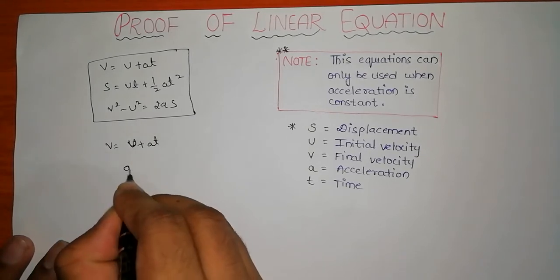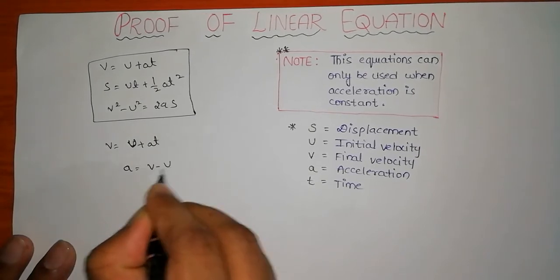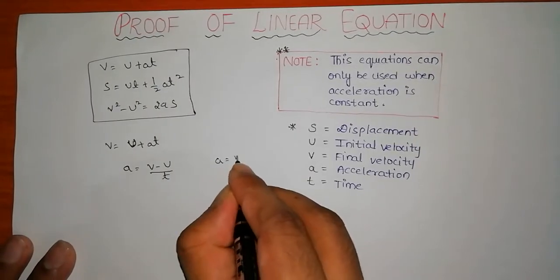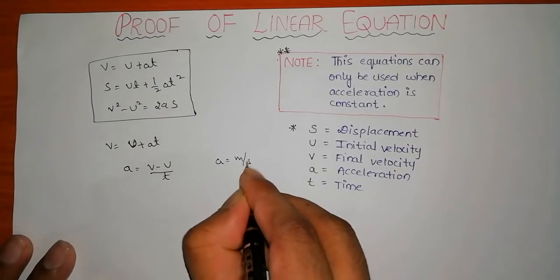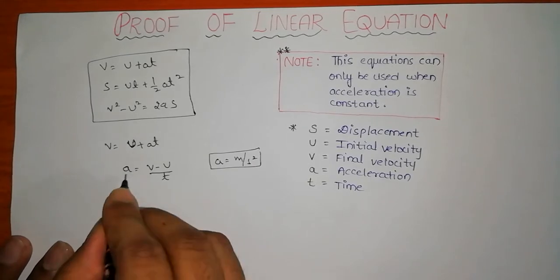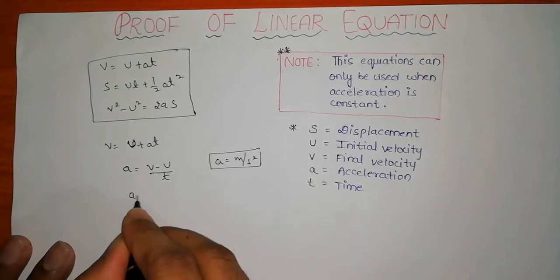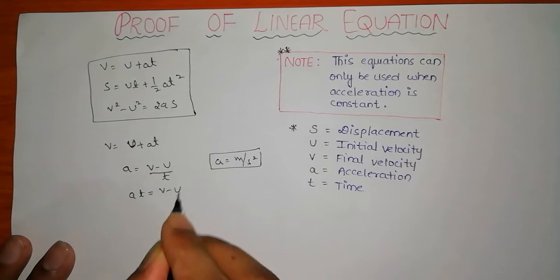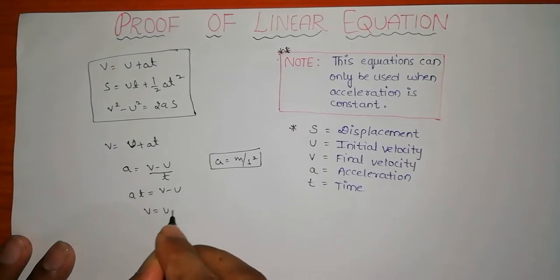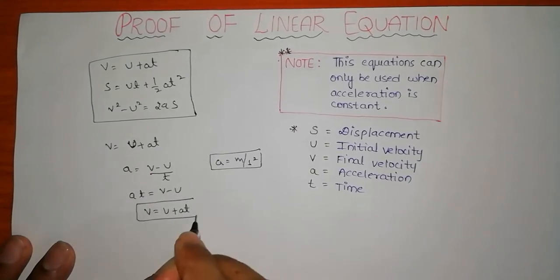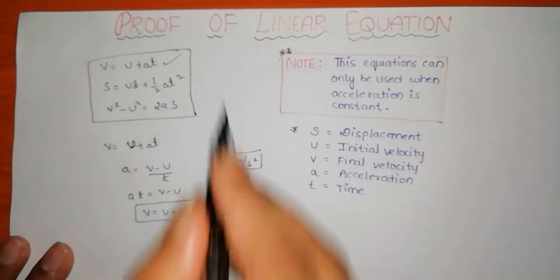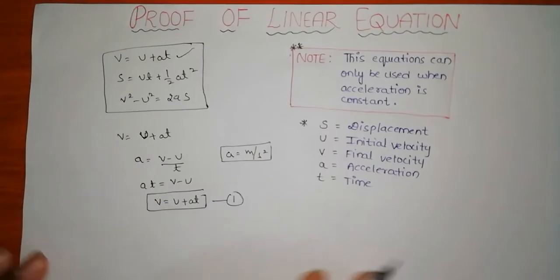How do we derive V = U + AT? Acceleration can be written as A = (V - U) / T, and the units of acceleration are meters per second squared. Cross-multiplying gives AT = V - U, so V = U + AT. This first formula has been derived.